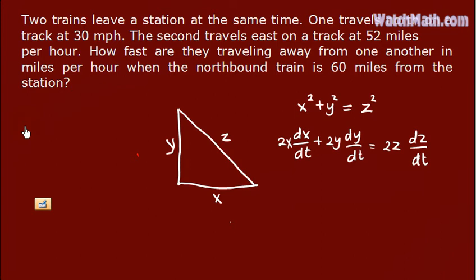We want dZ/dt when the distance of the northbound train equals 60 miles, when Y equals 60. When Y equals 60, it means this northbound train already traveled for two hours because its speed is 30 miles per hour. So if the distance is 60 miles, it means it already traveled for two hours.